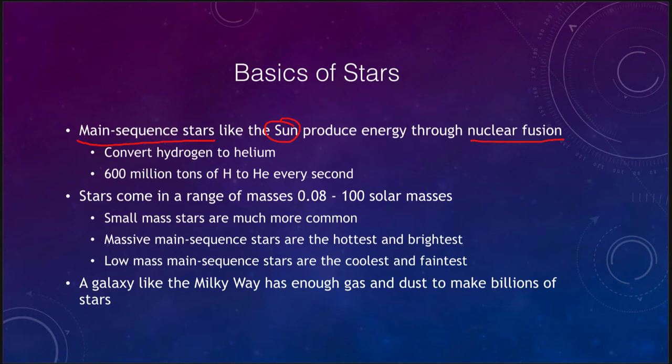They are converting hydrogen into helium at the rate — for our sun — of about 600 million tons of hydrogen into helium every single second. However, the sun has so much hydrogen that it can do this for 10 billion years without running out.